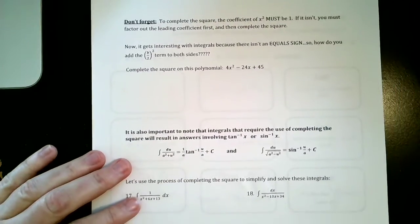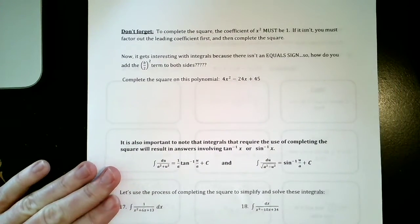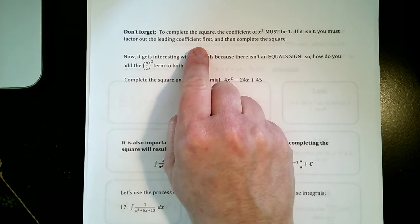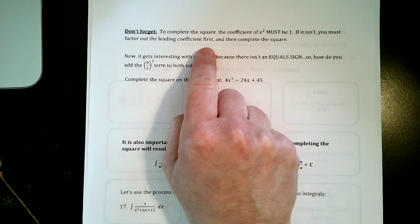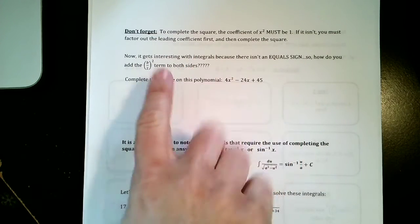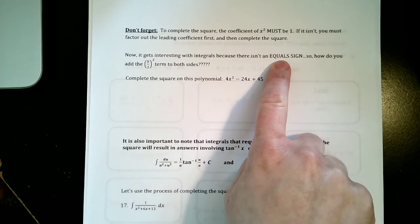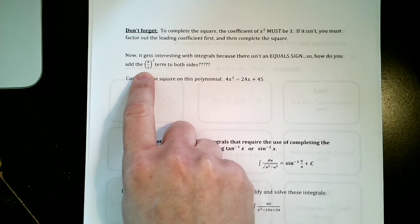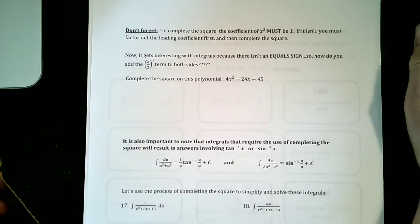Don't forget, to complete the square, the coefficient of x² must be 1. If it isn't, you must factor out the leading coefficient first and then complete the square. It's going to get interesting with integrals because there's no equal sign in an integral, so how do you add that half of b squared term to both sides? That's what we're going to talk about in the next video.